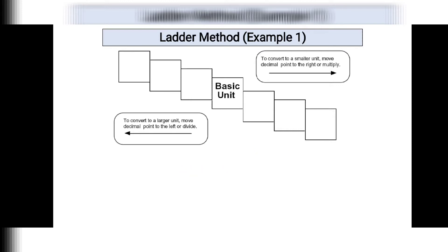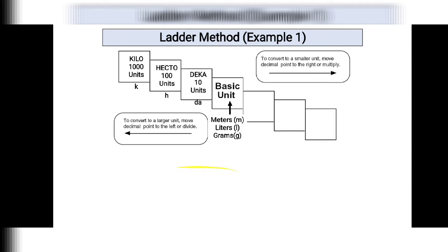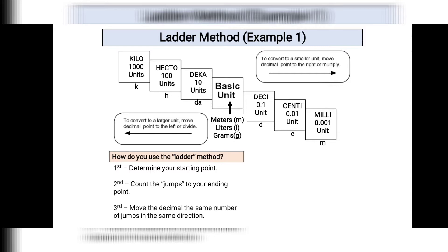Let us now start discussing how to convert units in the metric system. Again, you must memorize: kilo, hecto, deka, basic unit, deci, centi, and mili. How do we convert? First, you have to determine your starting point, and the starting point is always the decimal point.